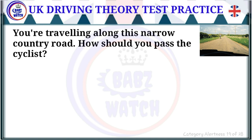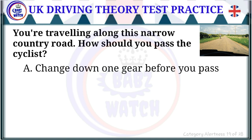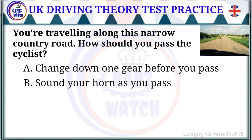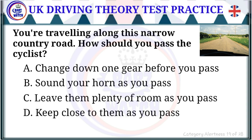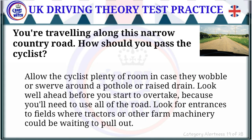Question 19 of 28: You're travelling along a narrow country road. How should you pass the cyclist? The correct answer is: leave them plenty of room as you pass. Allow the cyclist plenty of room in case they wobble or swerve around a pothole or raised drain. Look well ahead before you start to overtake and watch for entrances to fields where tractors or farm machinery could be waiting to pull out.